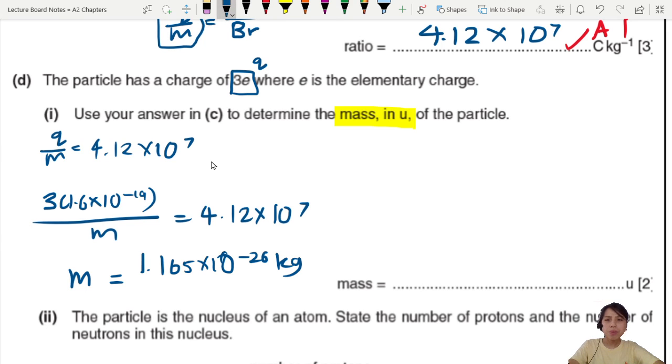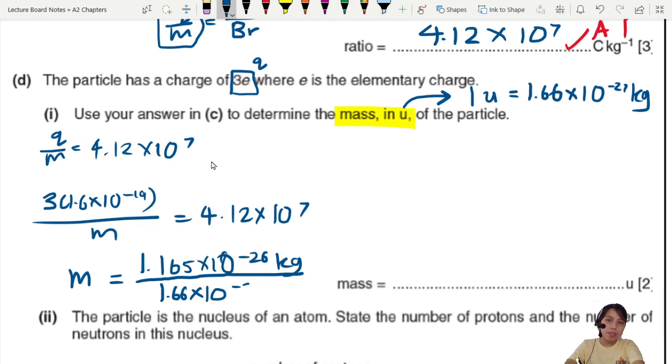They want the mass in u. So if you write this wrong, this is not the final answer. We need to convert to u. How do we convert to u? What is u? U is a constant, a way of measuring very tiny masses. If you look at the data formula sheet once again, 1u is about 1.66 times 10^-27 kg. So we need to convert.